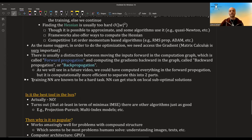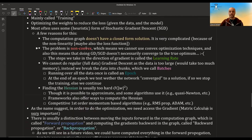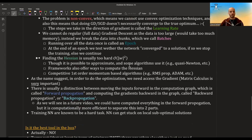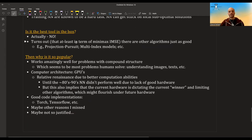One final note is that training the neural networks is a really hard task. It's known to be a really hard task because you can get stuck on many local suboptimal solutions. As I mentioned, it's not convex. There are local optima that can be quite bad. Another question is, is it the best tool in the box? Is it proved that neural networks are the best, they are doing the best? And surprisingly, no.